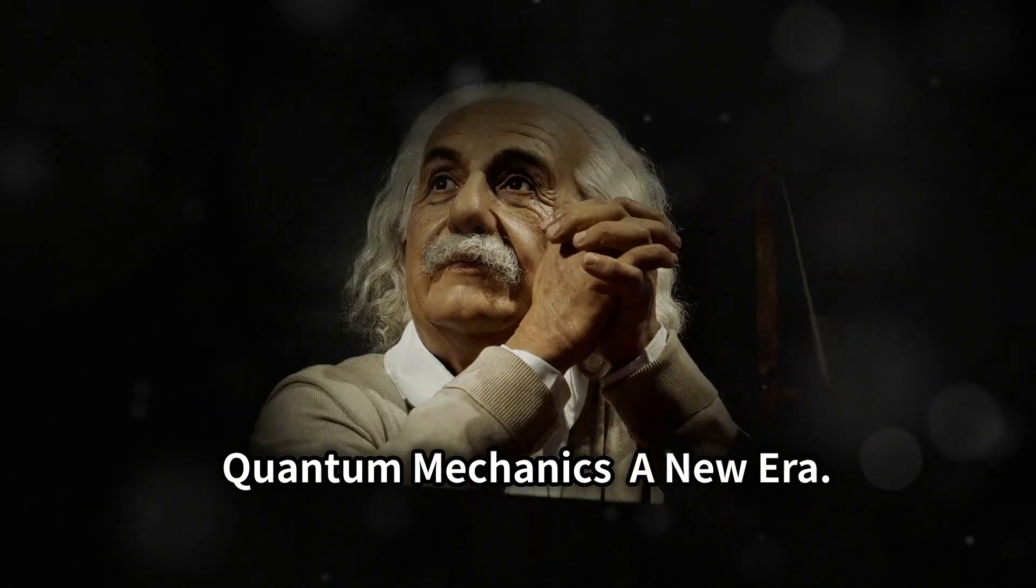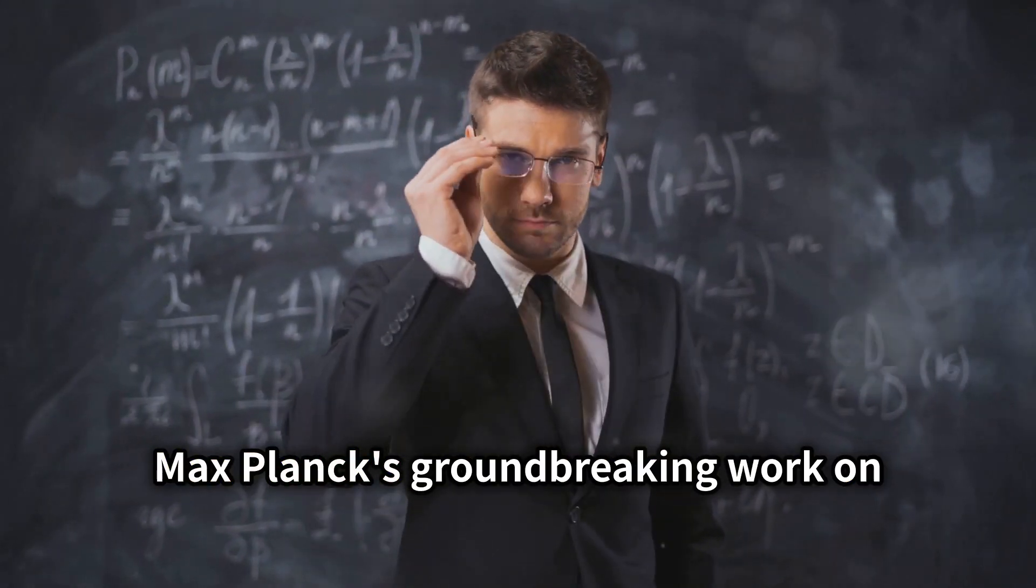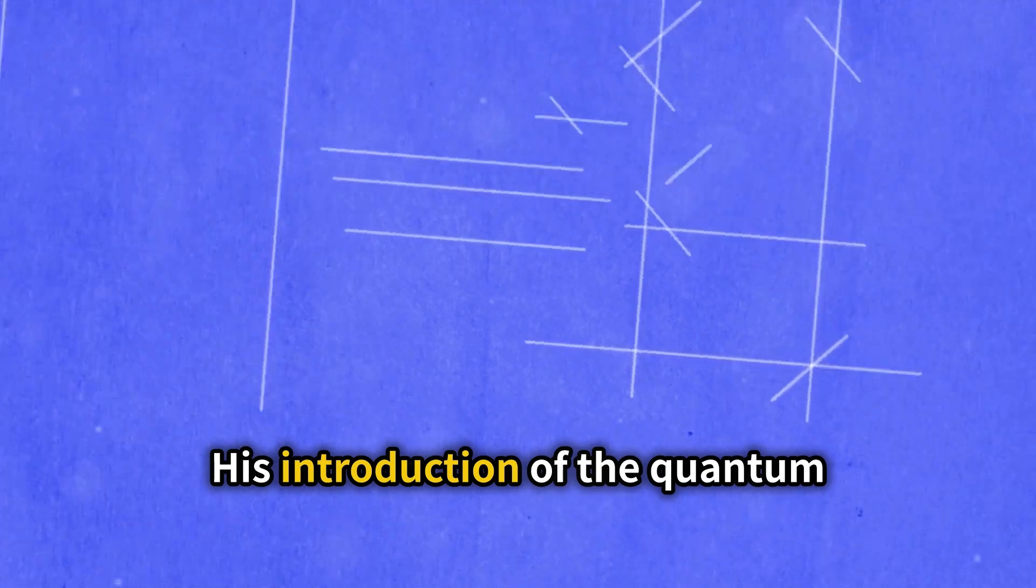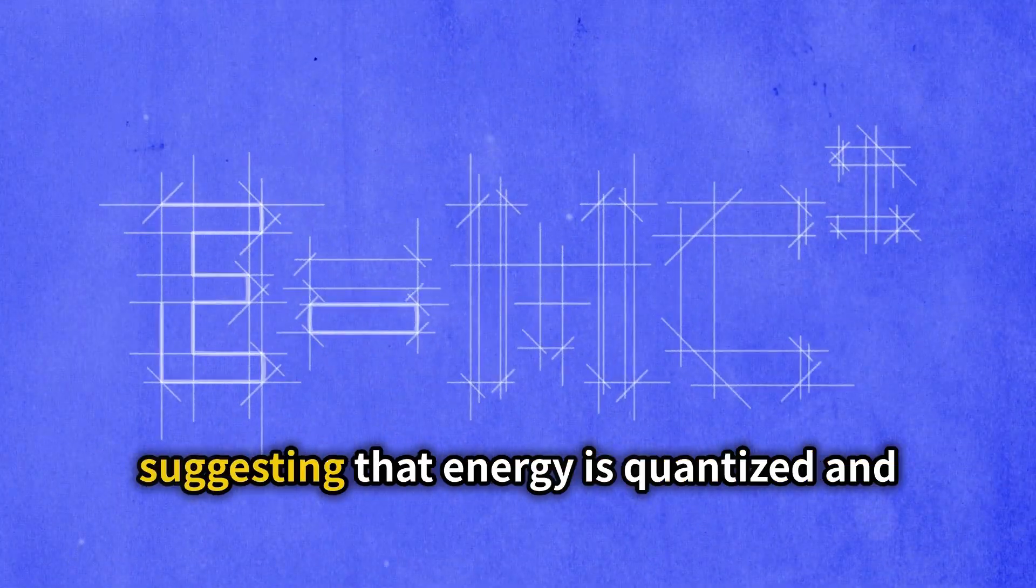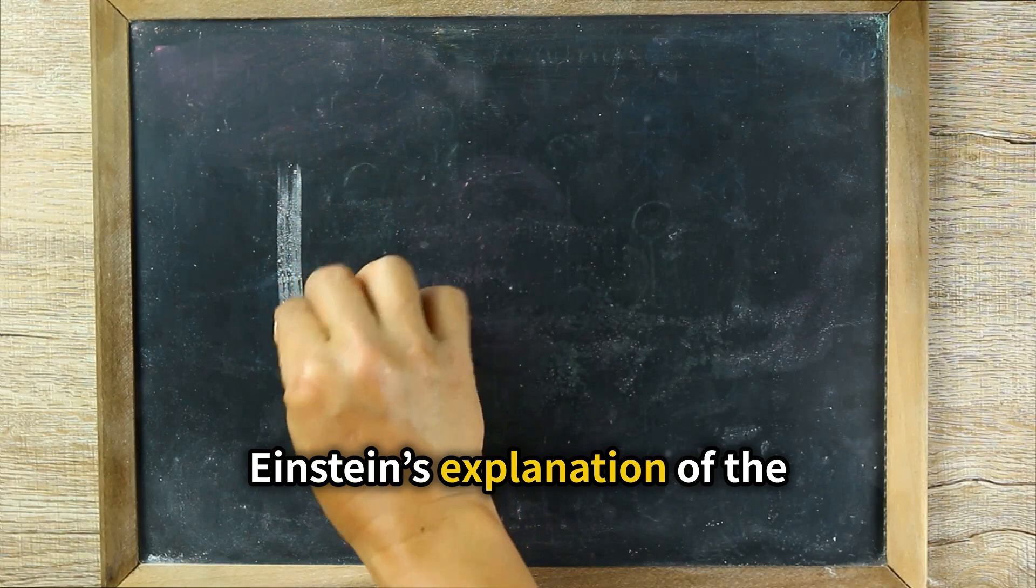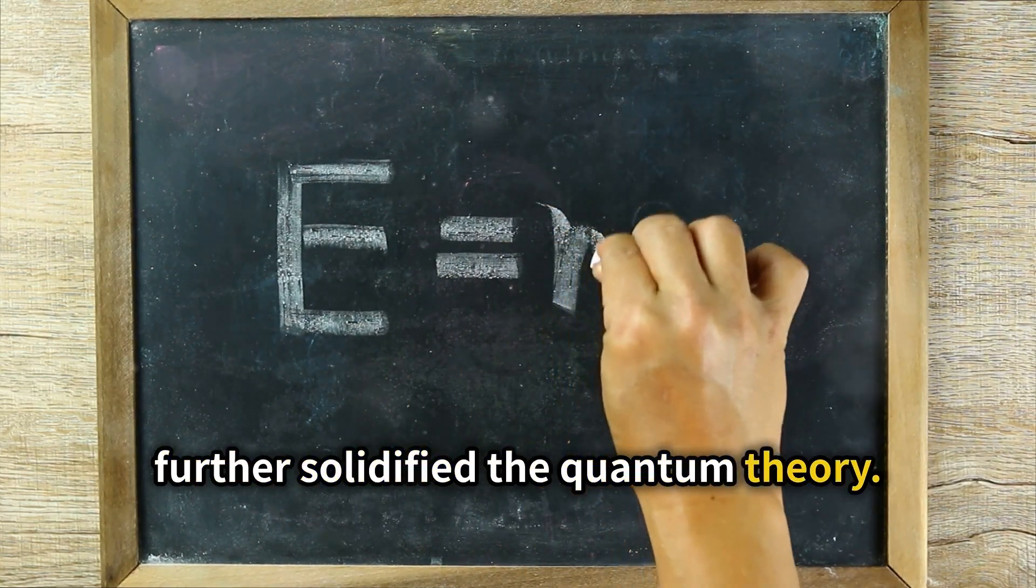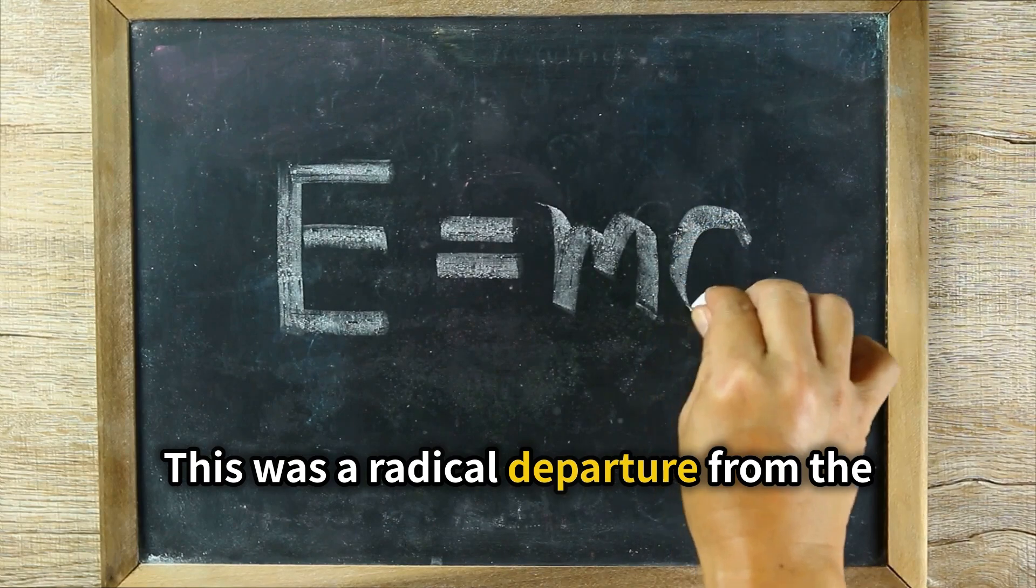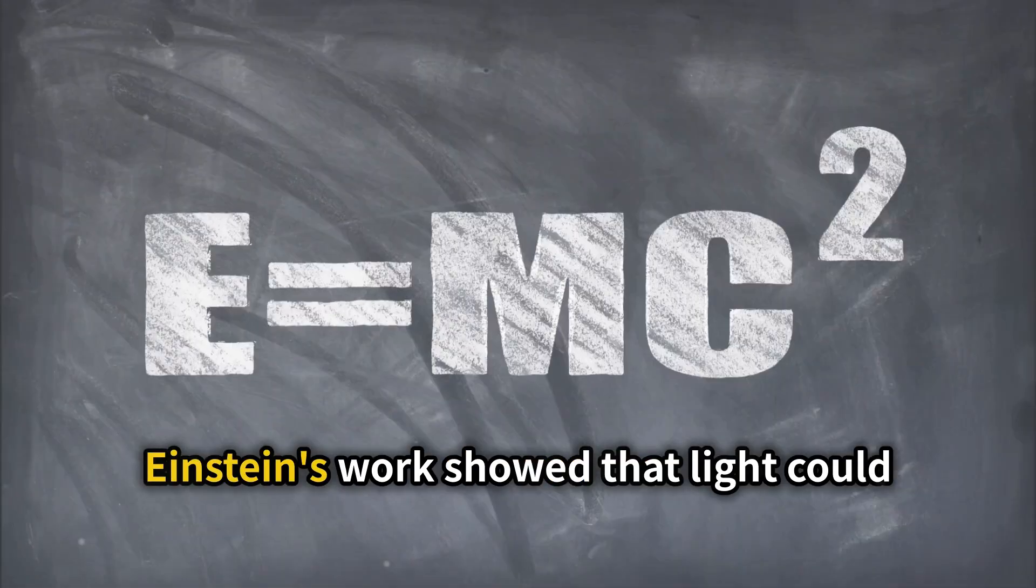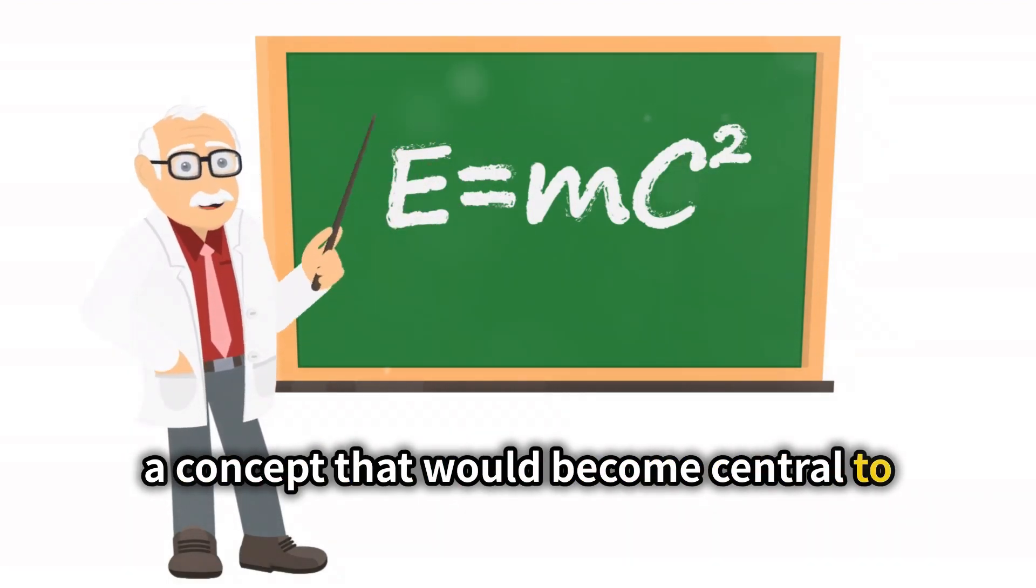Quantum mechanics, a new era. The dawn of the 20th century marked a pivotal moment in the history of science. Max Planck's groundbreaking work on black body radiation laid the foundation for a new understanding of the physical world. His introduction of the quantum hypothesis was revolutionary, suggesting that energy is quantized and can be emitted or absorbed in discrete units called quanta. Einstein's explanation of the photoelectric effect, which demonstrated that light itself is quantized, further solidified the quantum theory. This was a radical departure from the classical wave theory of light, which had dominated scientific thought for centuries. Einstein's work showed that light could be understood as both a wave and a particle, a concept that would become central to quantum mechanics.